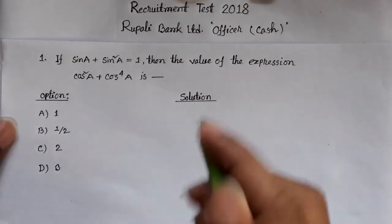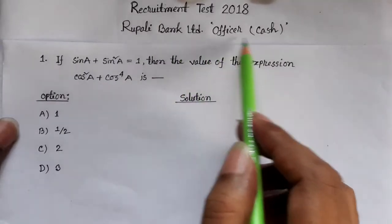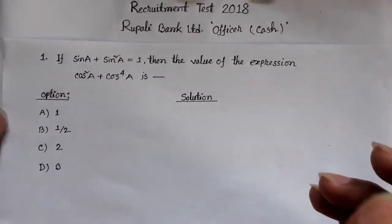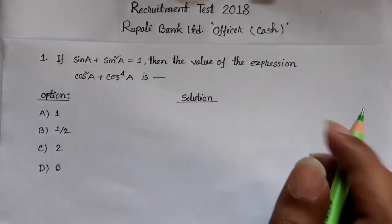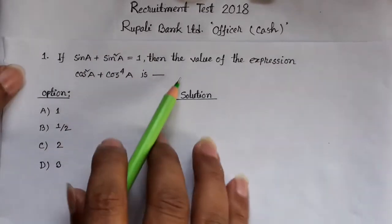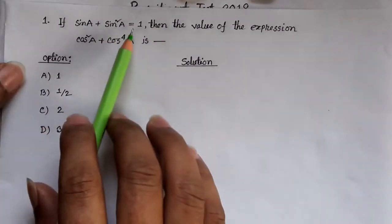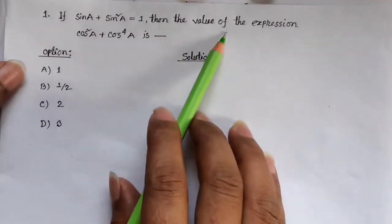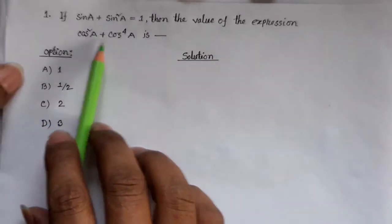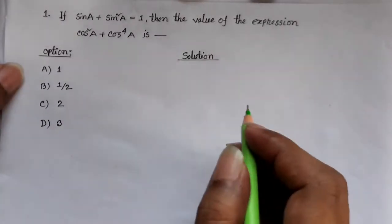Hello, my name is Rupali Bank Limited Officer Cash 2018. The first question is: if sin a plus sin squared a equals 1, then the value of the expression cos squared a plus cos to the power 4a equals what?